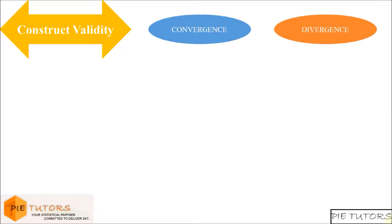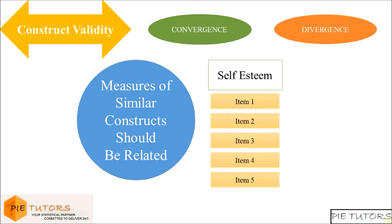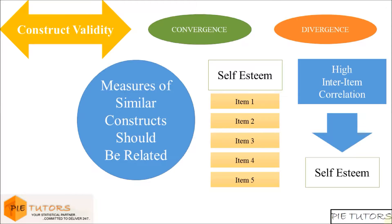In order to establish convergent validity, it is required to show that the measures of constructs that theoretically should be related to each other are, in fact, observed to be related to each other. However, if there are five items of a self-esteem construct and all the items show high intercorrelation, we can theorize that all the five items reflect the idea of self-esteem.